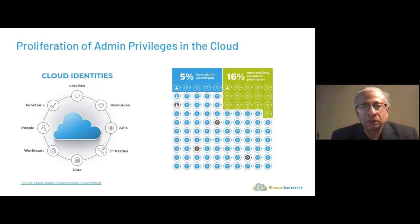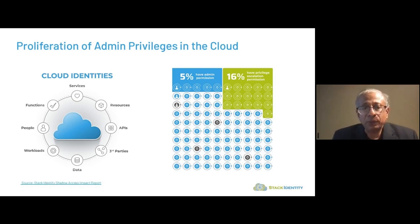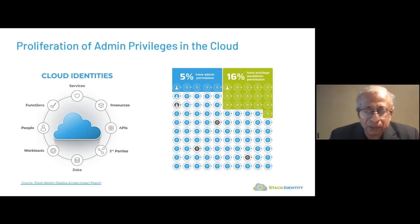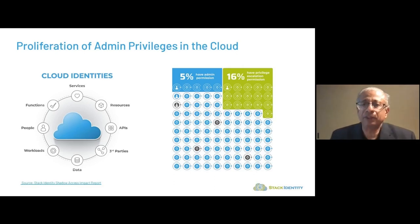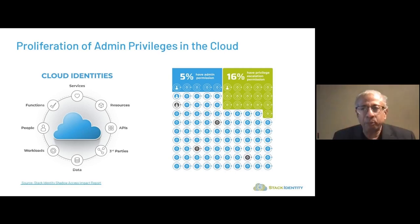Another important observation is the proliferation of admin privileges in the cloud. In the IAM space, we're taught to look at admins as truly administrators, but in the cloud you can attach admin privileges to any role. We're seeing 5% of all identities have admin permissions — in most organizations it should be less than 1%. On top of that, 16% of these identities have privilege escalation permissions, completely violating the principle of least privilege. Three times the number of admins have a combination of admin-type access and the ability for the identity to escalate their own permissions. That's a massive toxic combination.